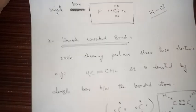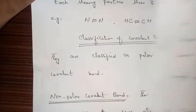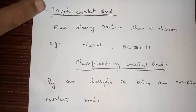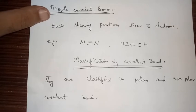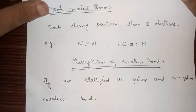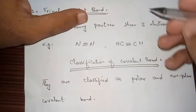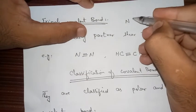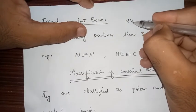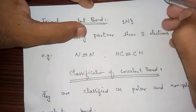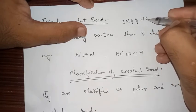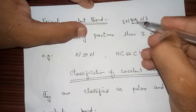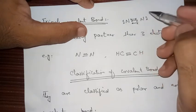The triple covalent bond is the bond in which each sharing partner shares three electrons with each other. For example, in nitrogen (N2), nitrogen has five electrons in its valence shell. Each nitrogen atom contributes three electrons to form a triple covalent bond between the two nitrogen atoms, completing their octets.